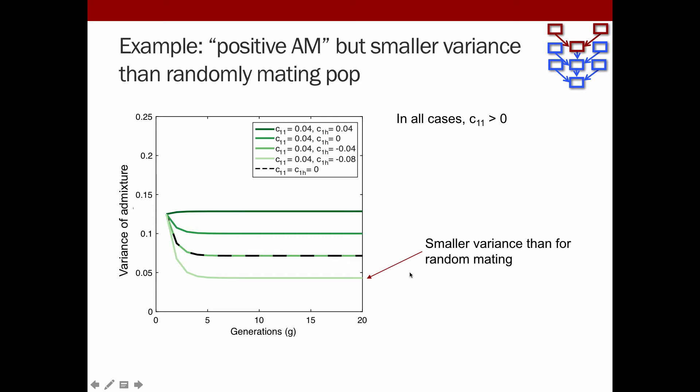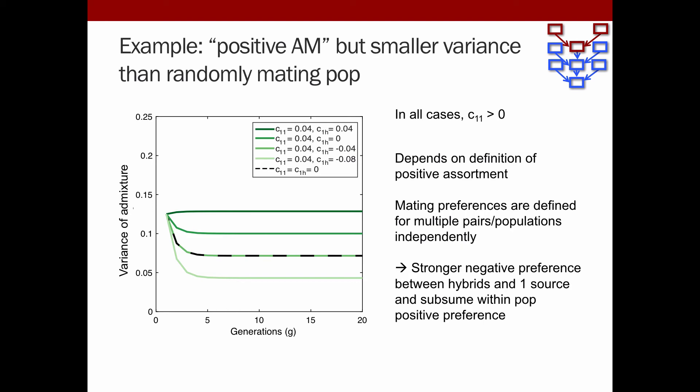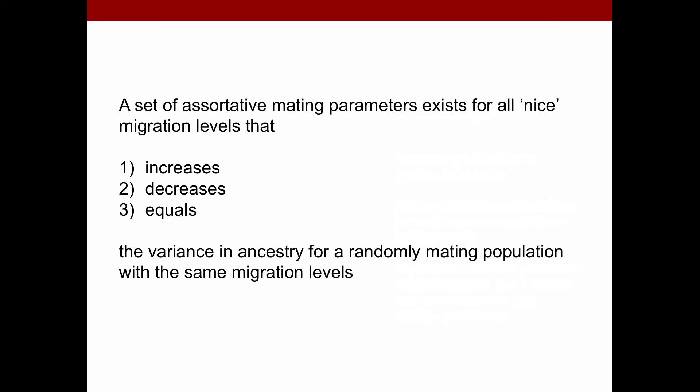Well, in this case, C22 is substantially more negative, so it's more disassortative mating than you have assortative mating in the other two populations. So you have parameters you have to define in all these populations at once. So when we think about assortative mating, it might not just be in our population of interest, but multiple populations at the same time.